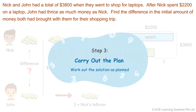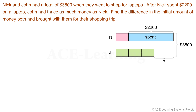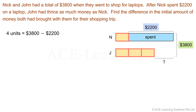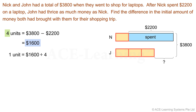Now that we have the plan, let's move to Step 3: Carry out the plan. Follow the plan to work out the solution. It is always easier to work with whole or equal units. How many equal units can we find in this model? There are three here and one here, so we have four equal units. The four equal units equal the total minus the expenses. Four units = $3,800 − $2,200 = $1,600. One unit = $1,600 ÷ 4 = $400.